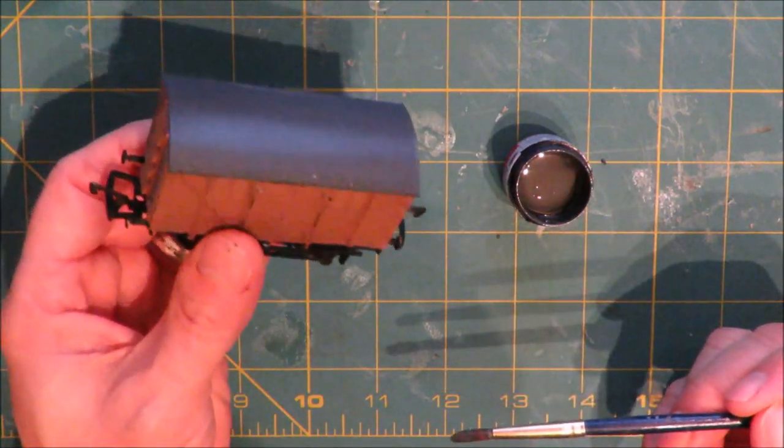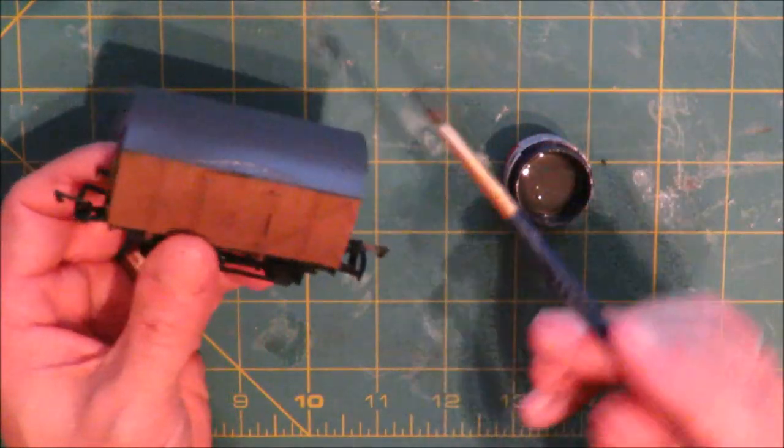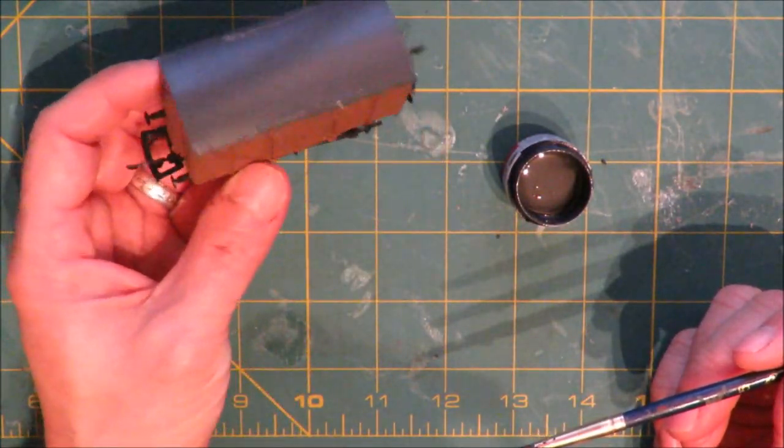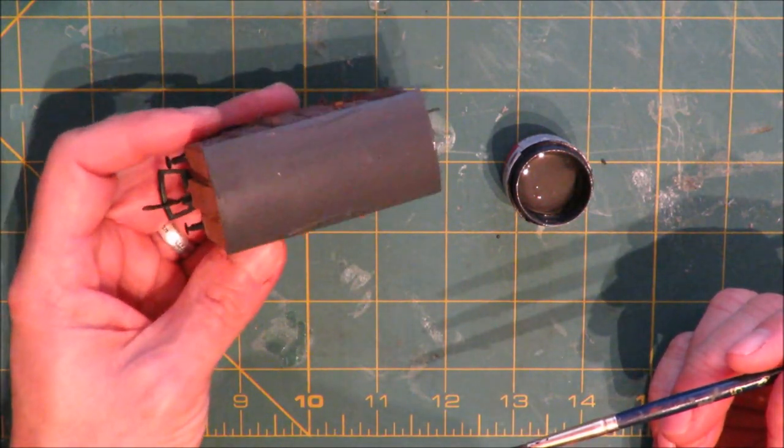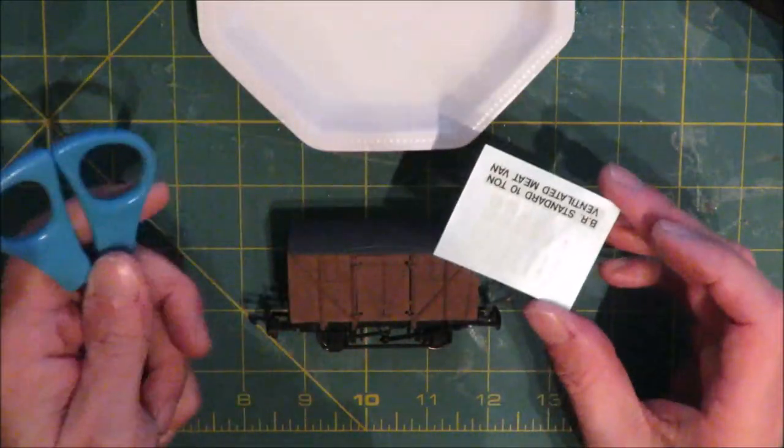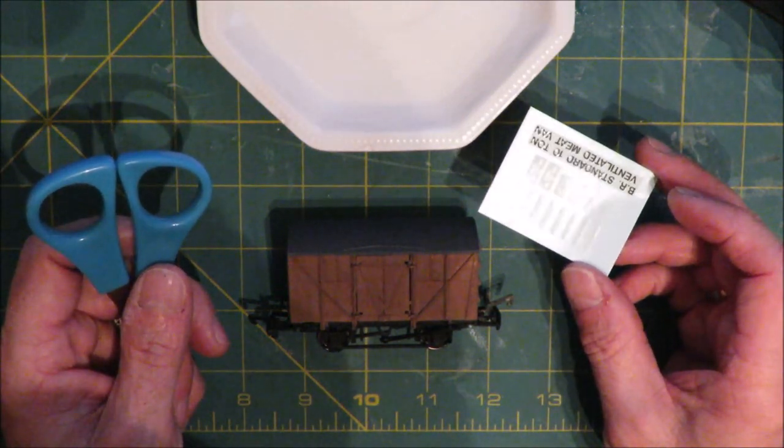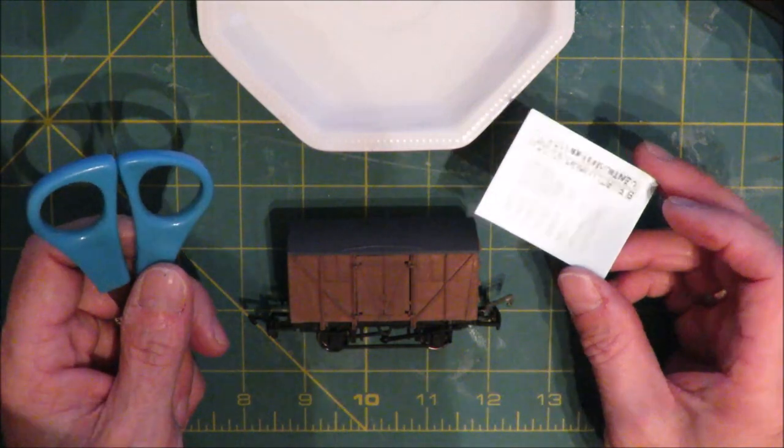There we go, so that's the roof pretty much done. So we've got to do now is some transfers and some weathering and we'll have rather a nice looking wagon. That's the underframe done there in black, the brown sides and the grey roof. So here we go then. What we're going to do now is try applying these water slide transfers. You don't have to do them if you don't want to, but I thought just to do a full review that would be worth having a go.